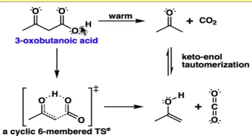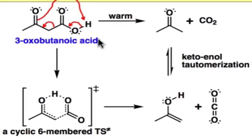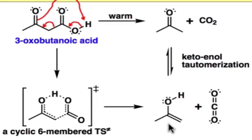The curved arrows show the special role that the β-keto group plays in this process. You can see the loss of CO2 and the production of the enol, which illustrates the importance of that β-keto group.